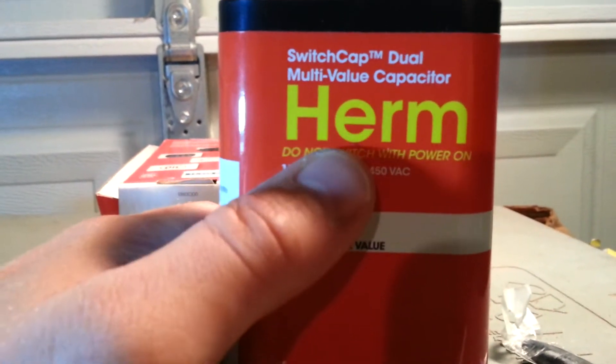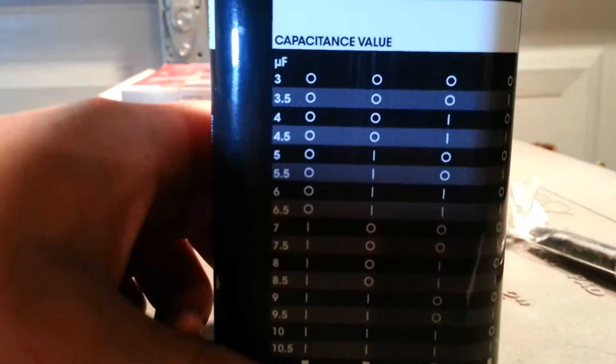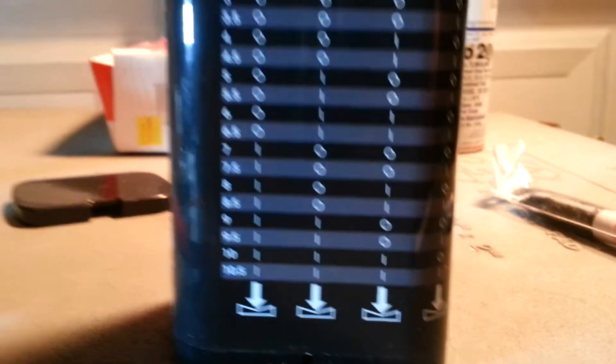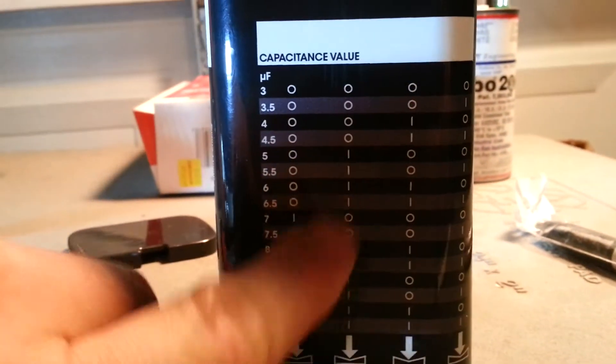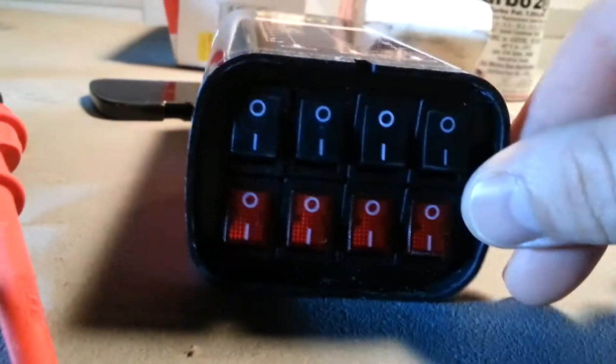One side has your Hermetic, and your other side has your fan. Down here, it shows all your different values, and what switches, whether they're on or they're off, of what to set it. So, sticking with the same scenario, the 45 7.5, I want to do this here.